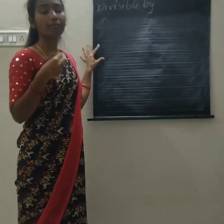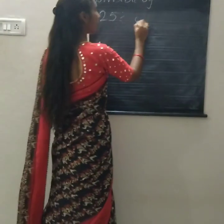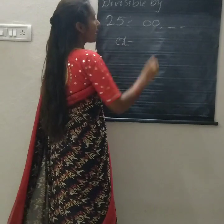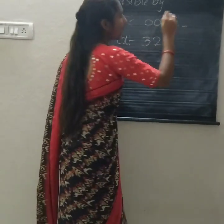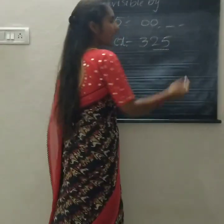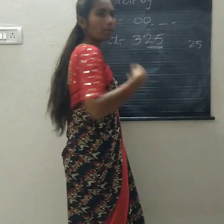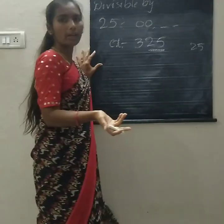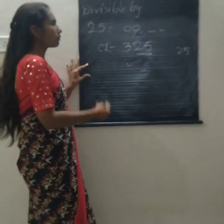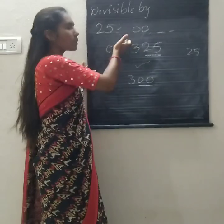Next we are going to the divisibility of 25 rule. The divisibility of 25 rule is: the last 2 digits should be 00, or the last 2 digits are divisible by 25. Example: 325. The last 2 digits are 25, and 25 is divisible by 25, so 325 is divisible by 25. Next: 300. The last 2 digits are 00, so 300 is divisible by 25.